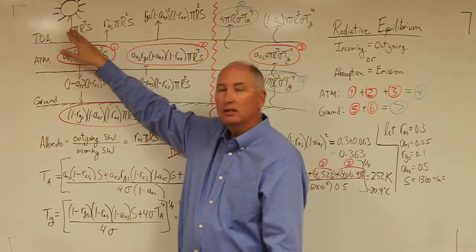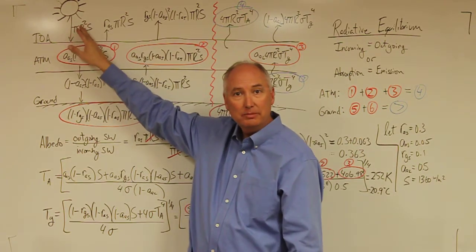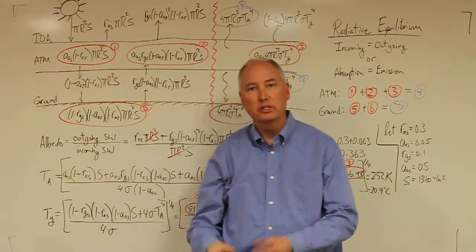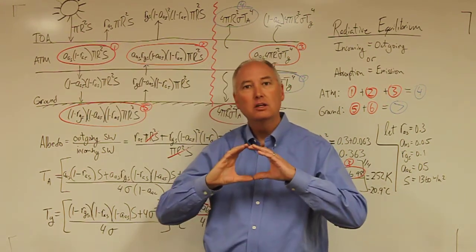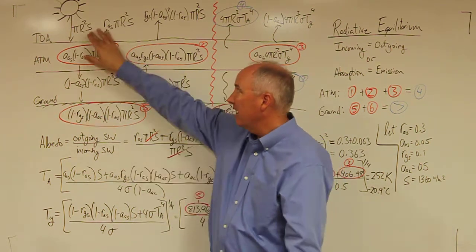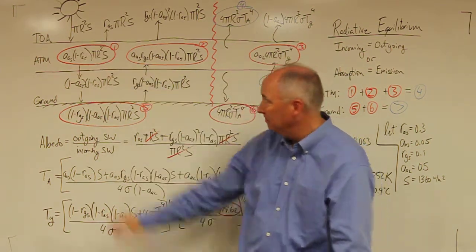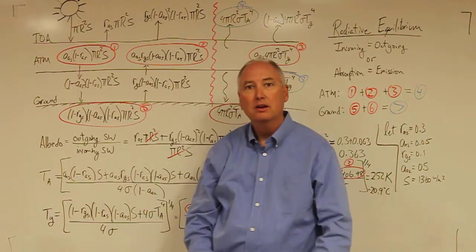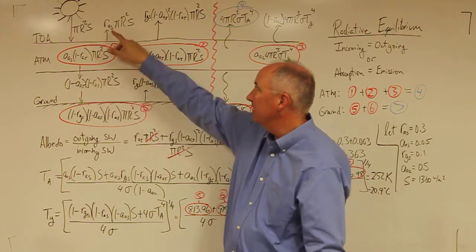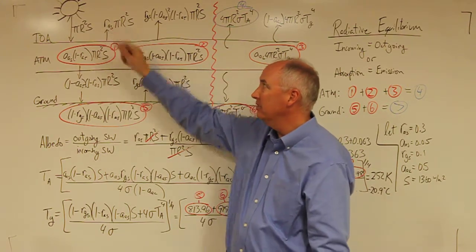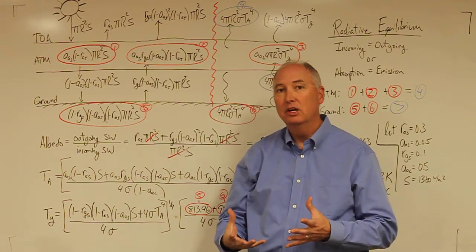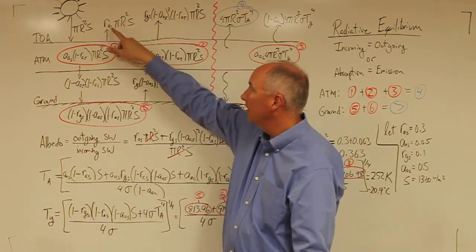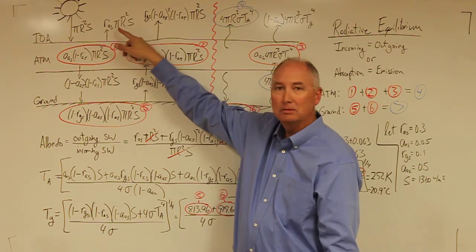Starting at the beginning, the radiation that comes into the Earth's system is pi r squared — the area of our disk when viewed from the Sun — times S, which is the solar constant. That's the amount of radiation incident on the top of the atmosphere. But in this model, we have a reflectivity of the atmosphere, RAS, so some of that energy is reflected from the top of the atmosphere, that amount being RAS times pi r squared S.